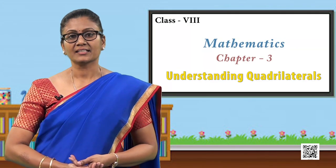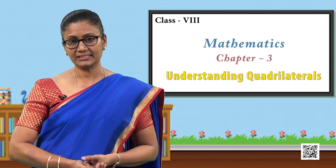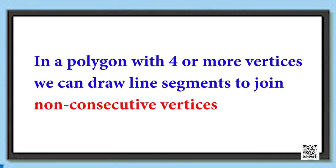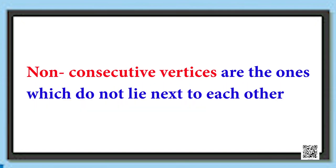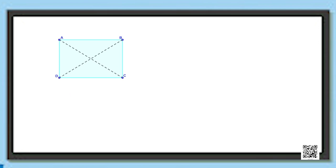A vertex is a point of intersection of two or more sides in a polygon. In any polygon having four or more vertices, we can join any two non-consecutive vertices using a line segment. In the quadrilateral ABCD, line segments AC and BD are such segments joining non-consecutive vertices.